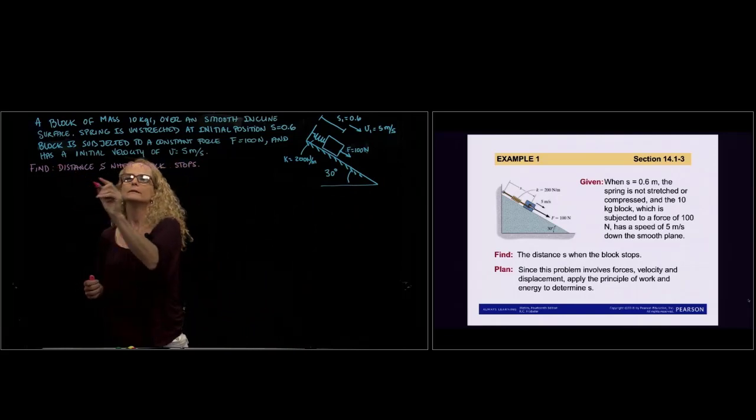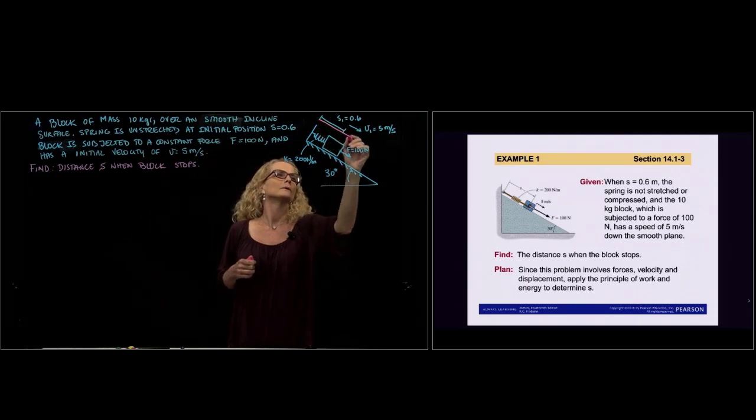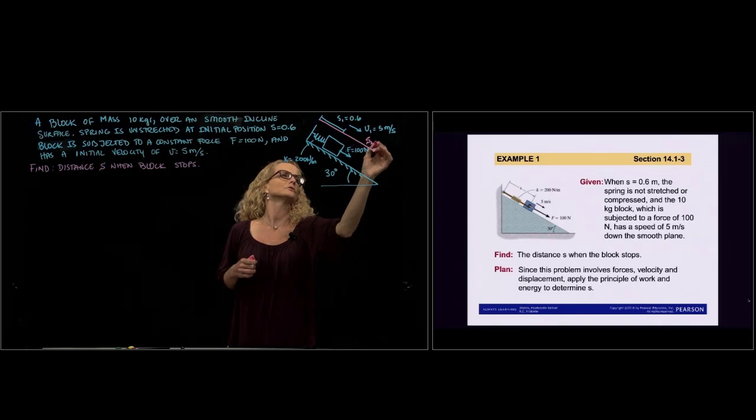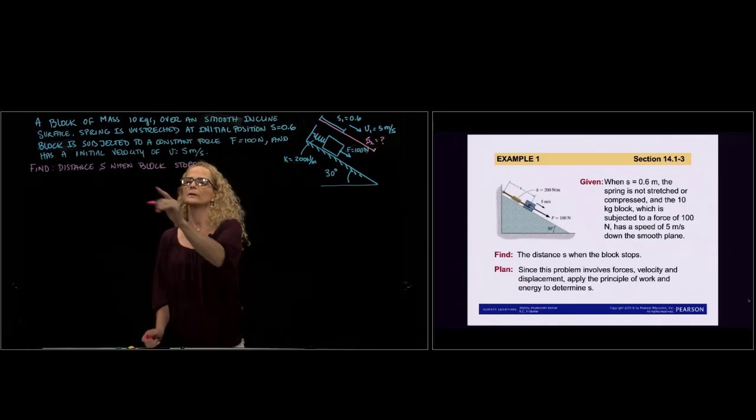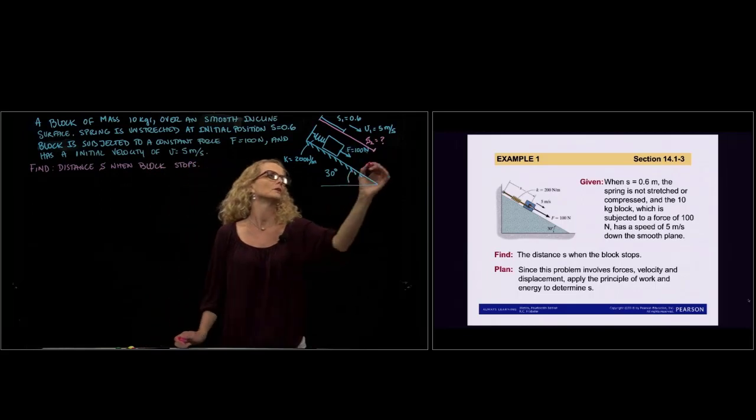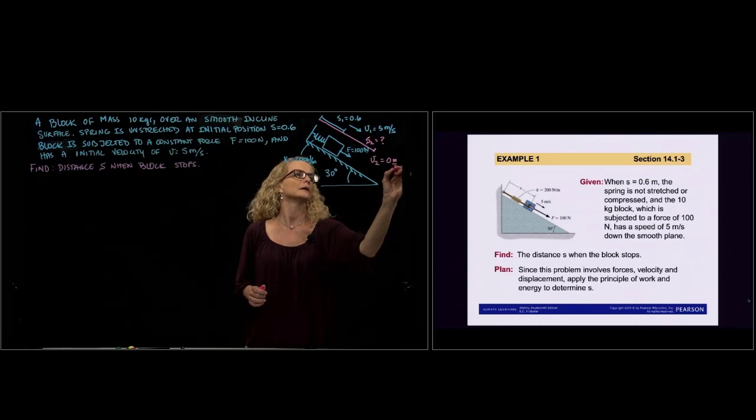They want us to find the distance s from here to some distance over here s2, when the velocity is zero, because it says when the block stops. So velocity 2 is equal to 0 meters per second.